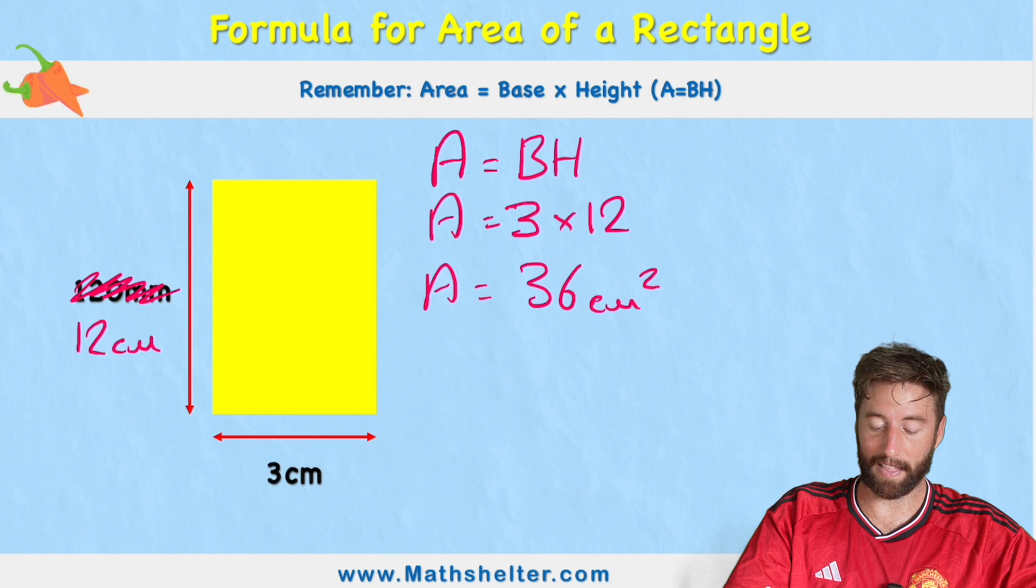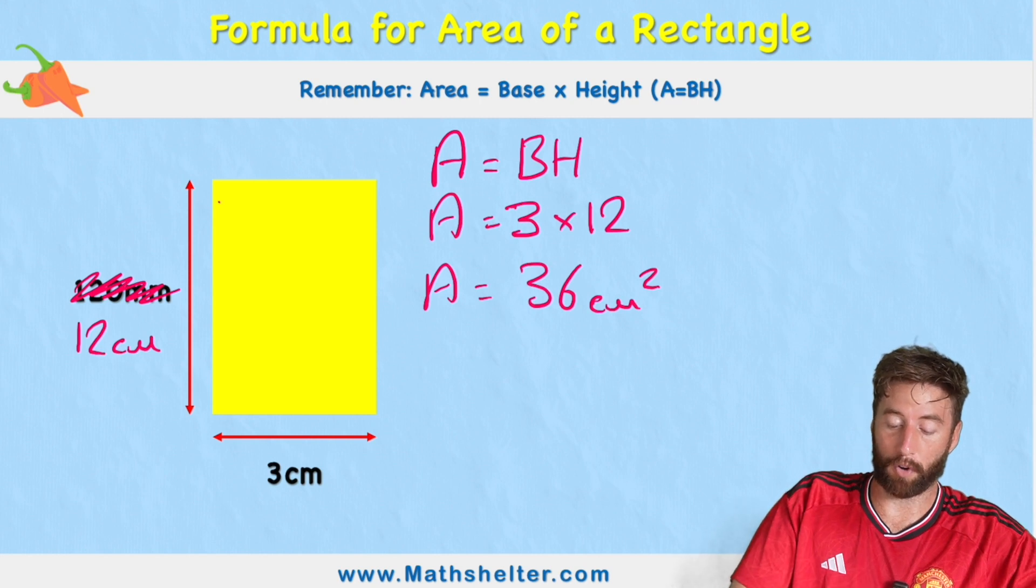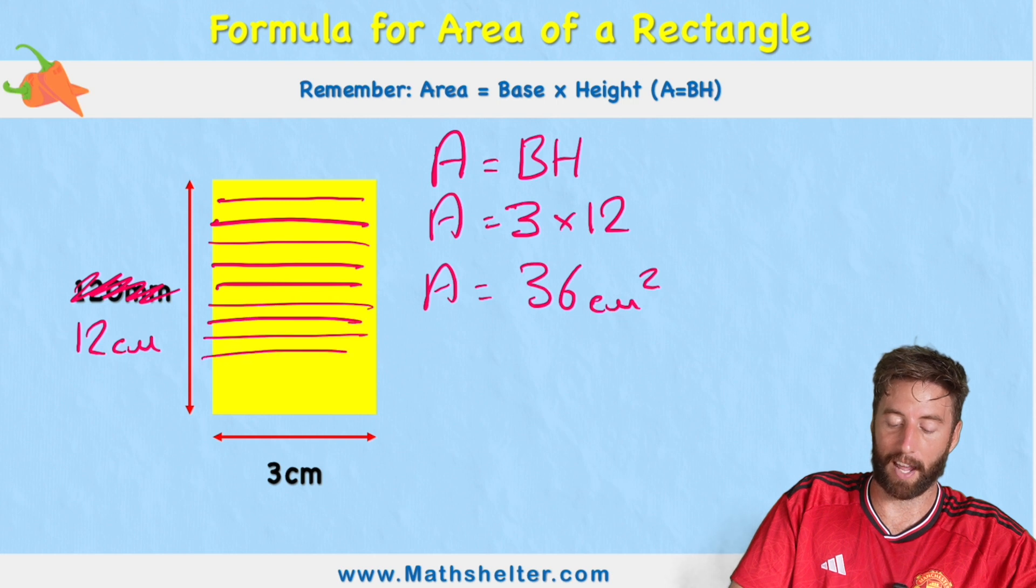Area equals 36 centimeters squared. Well done. Because again, this shape has been split into 12 rows. 1, 2, 3, 4, 5, 6, 7, 8, 9, 10, 11, and 12.